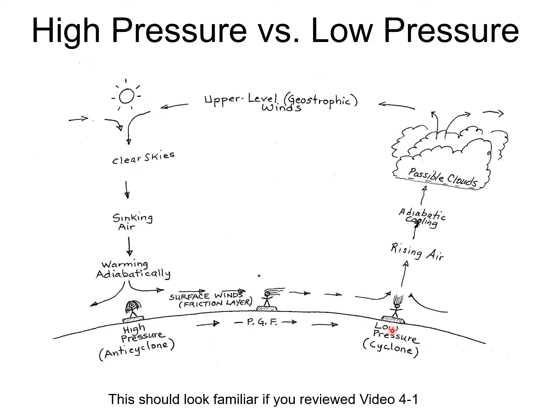Here's a diagram as a reminder: we've got low pressure always associated with rising air, cooling adiabatically, possibly high enough to form clouds, possibly giving you rain. That air will split somewhere in the upper troposphere and then move as a wind without very much friction. Some of those winds are called geostrophic winds, moving exactly parallel to the isobars in balance with the Coriolis force and the pressure gradient force. The air will find a place to sink down, and when it sinks we have adiabatic warming.